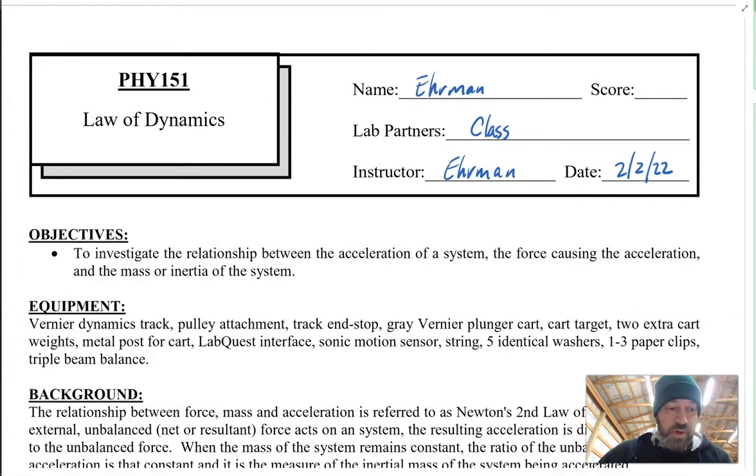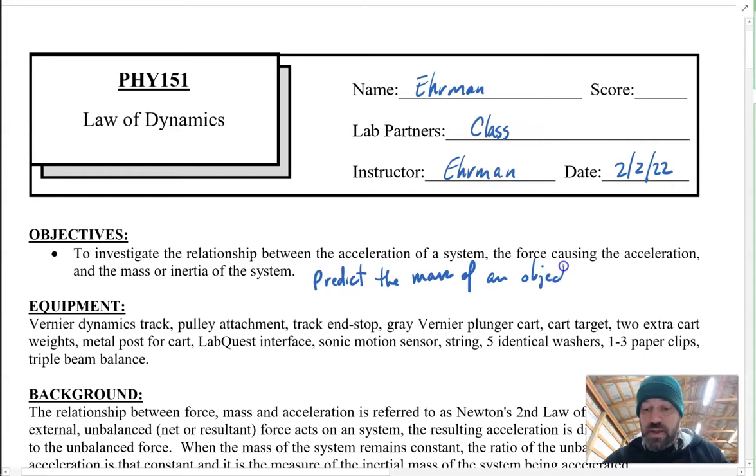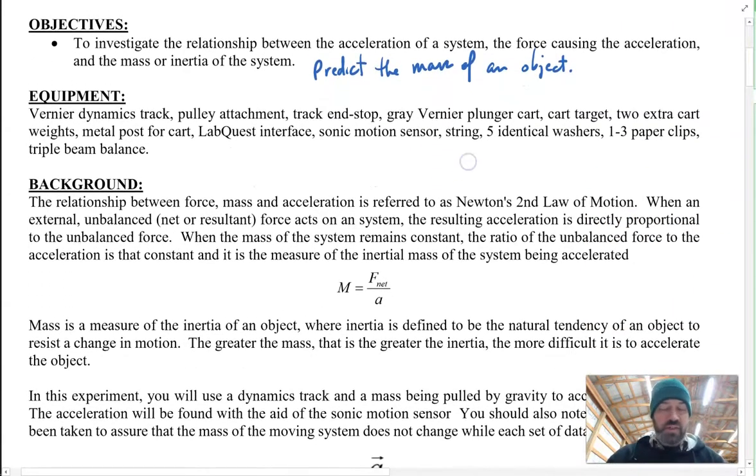This should be the document that you're looking at from our Unit 2 labs. Our objective today is to investigate the relationship between acceleration of a system, the force causing the acceleration, and the mass, or in other words, the inertia of the system. Now what's interesting about this particular lab is that we should be able to predict the mass of an object that can't easily be weighed or measured.